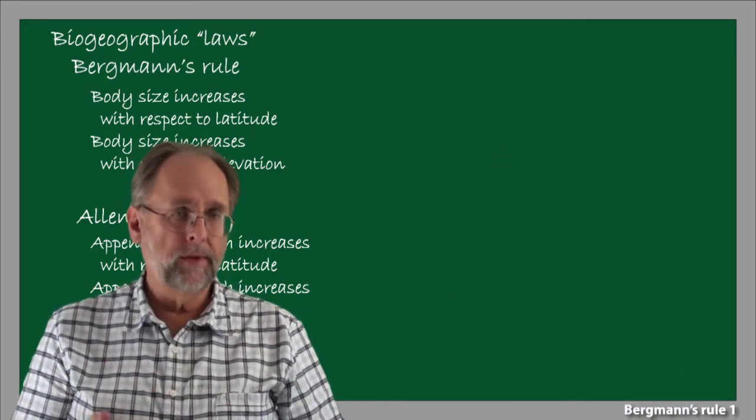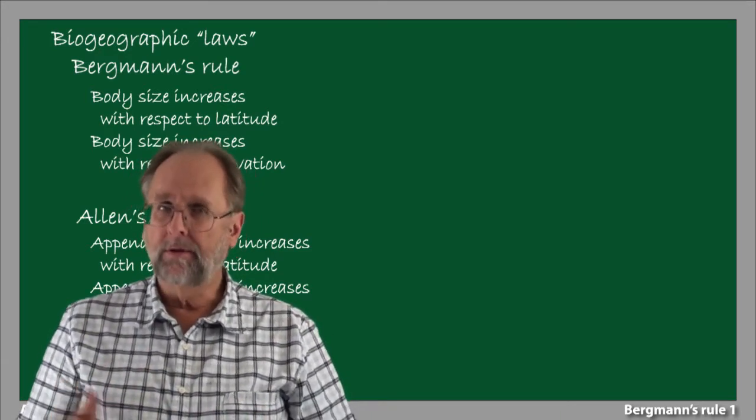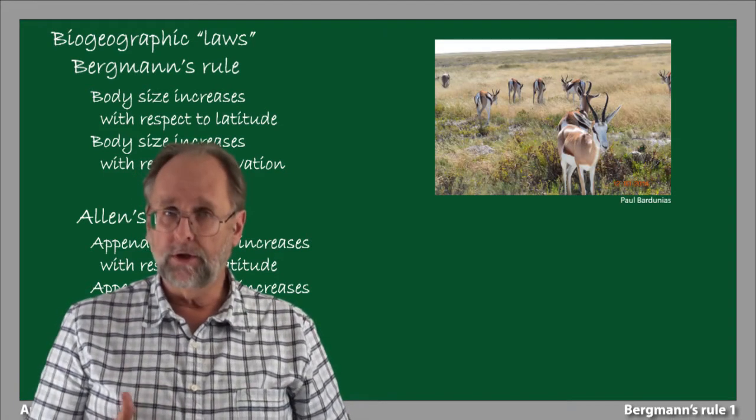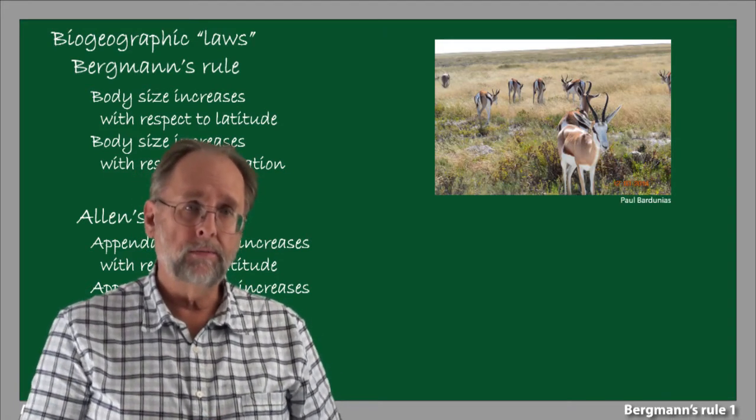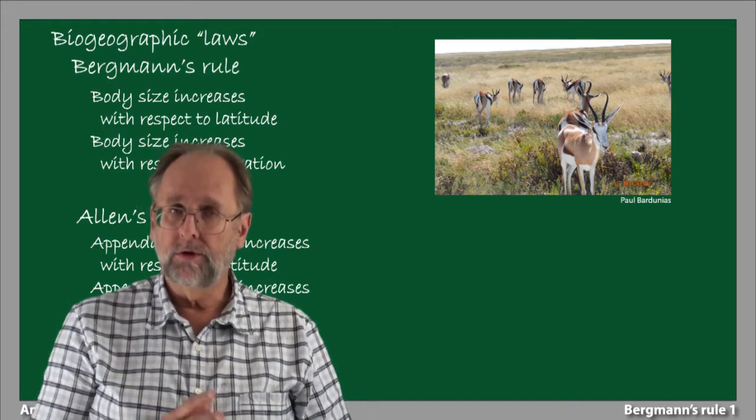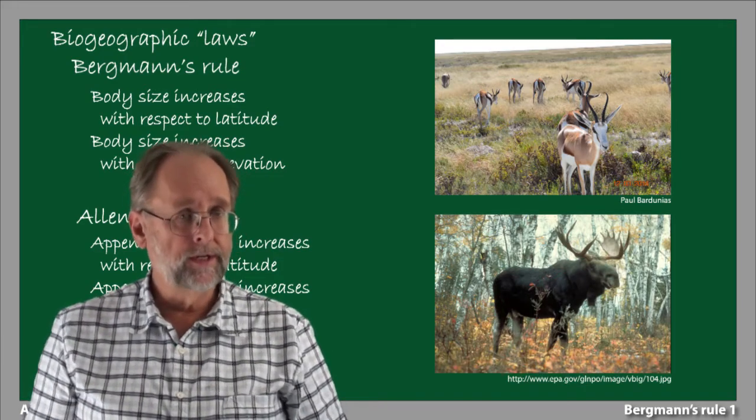It's not hard to come up with examples of both of these rules. Among the antelopes and other ungulates, for example, the tropical ungulate fauna is diverse and ranges to the small in body size, such as the springbok. As you get to higher latitudes, you start running into creatures like these, moose, which are the largest of the deer.